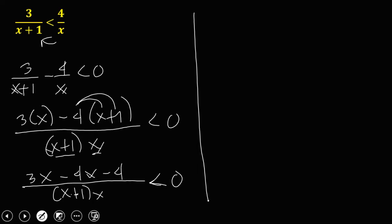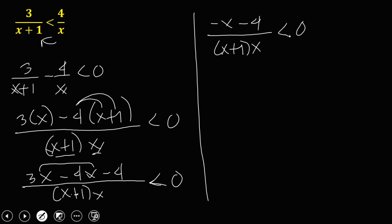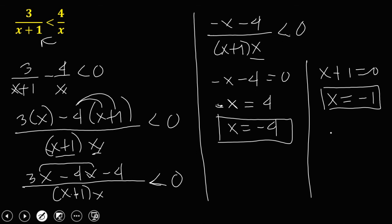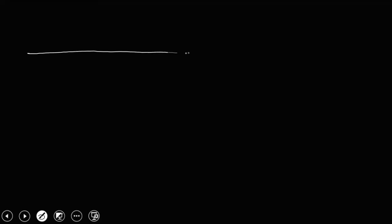Combining like terms: 3x minus 4x is negative x, minus 4, over x plus 1 times x, less than 0. Equating numerator and denominator to zero: negative x minus 4 equals 0, so negative x equals positive 4, giving x equals negative 4. Also x plus 1 equals 0, so x is negative 1. And x equals 0. These are the critical values. On the number line: 0, then negative 1, negative 2, negative 3, and negative 4.